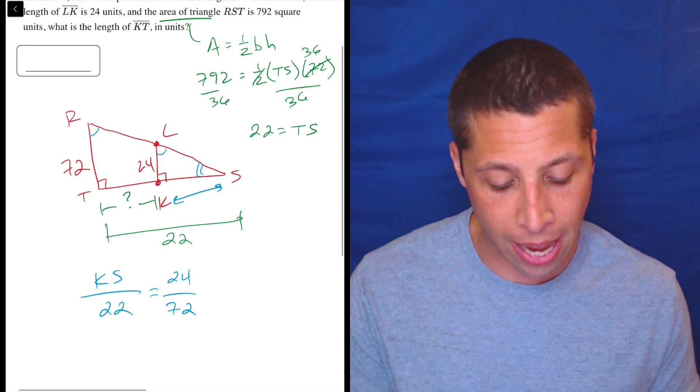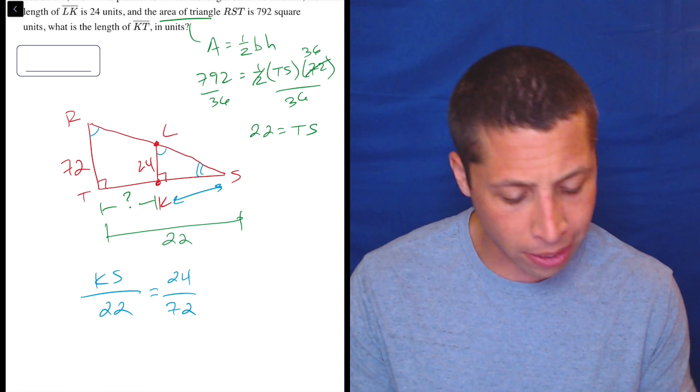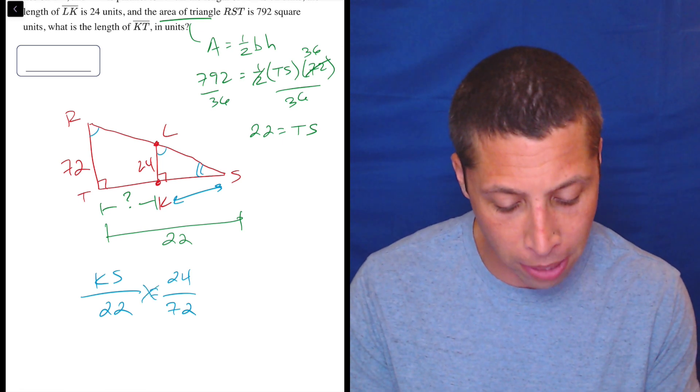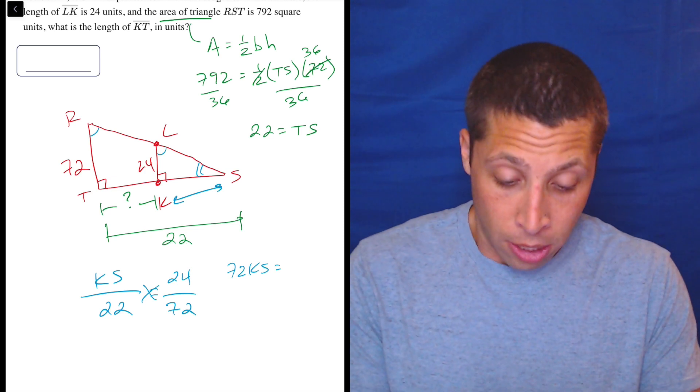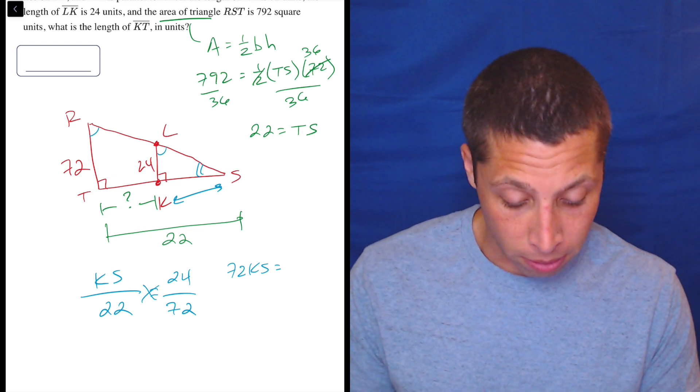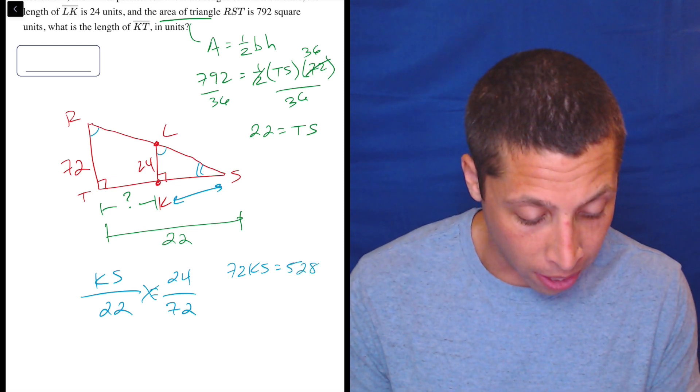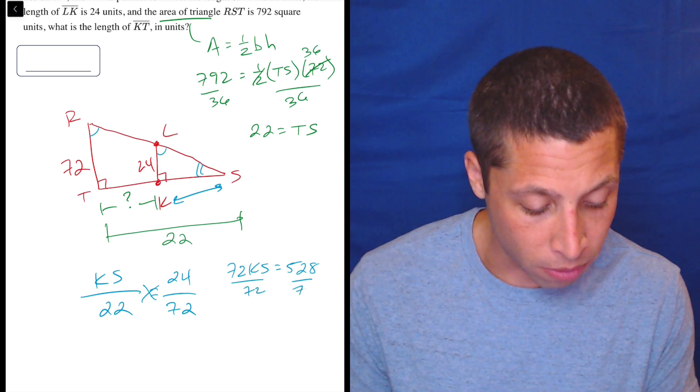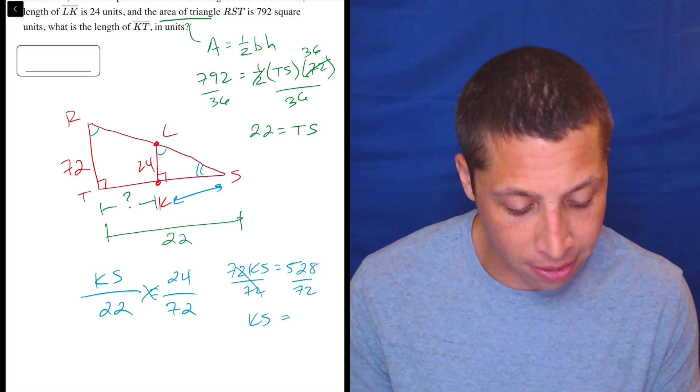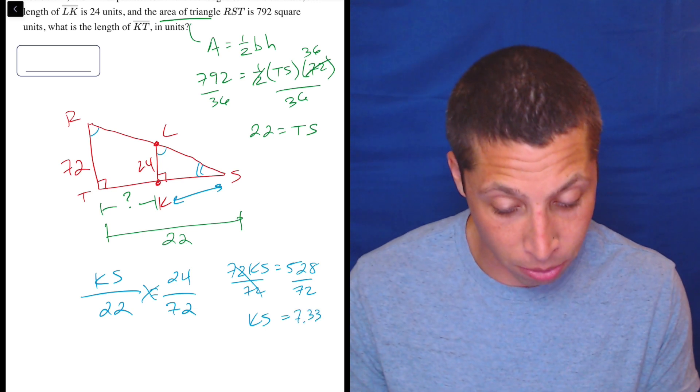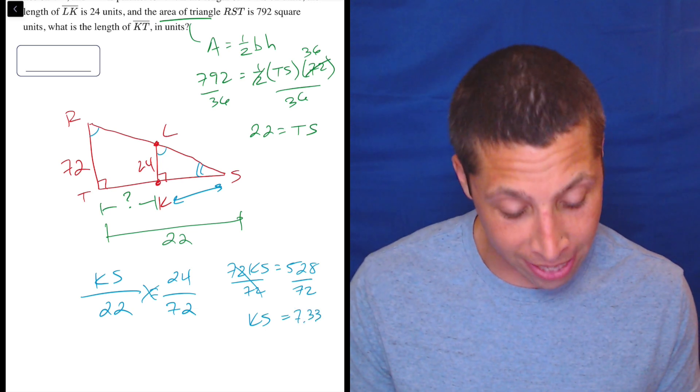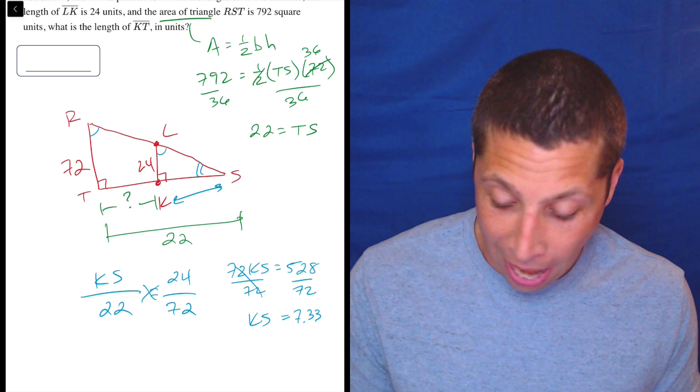So now we can solve for KS. So lots of ways to do that. Let's just do it the lazy way and cross multiply. So 72 times KS is 22 times 24 is 528. Divide on both sides. KS divided by 72 is 7.33. Is that for real? Yeah. Okay. It's going to happen.